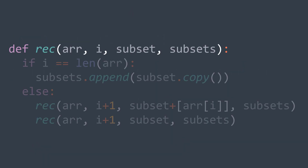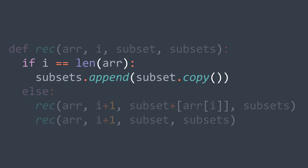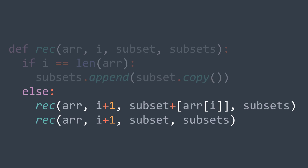For the code of the recursive solution, our recursive function takes four parameters: the array, the index of the actual element, the subset we're building, and the array of subsets. The base case is when i reaches the length of the array — if i equals the length, we append the subset we built to the array of subsets. Otherwise, we call the function twice: once by adding the element to the subset and once by not adding it, always calling with i+1 to move to the next element.